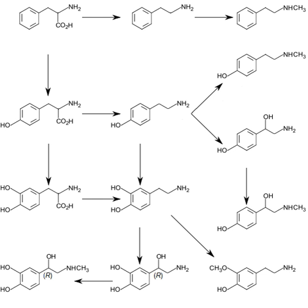Dopamine is the first catecholamine synthesized from dopa. In turn, norepinephrine and epinephrine are derived from further metabolic modification of dopamine. The enzyme dopamine hydroxylase requires copper as a cofactor and dopa decarboxylase requires PLP. The rate-limiting step in catecholamine biosynthesis is the hydroxylation of L-tyrosine to L-dopa. Catecholamine synthesis is inhibited by alpha-methyl-P-tyrosine, which inhibits tyrosine hydroxylase.